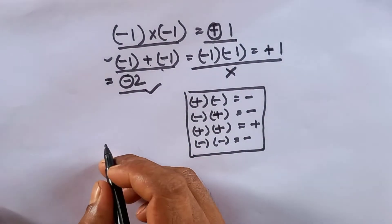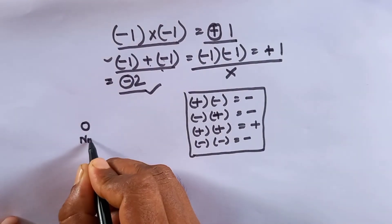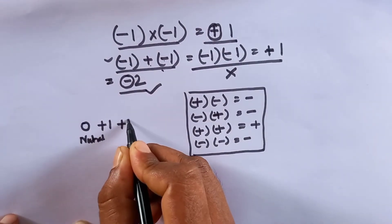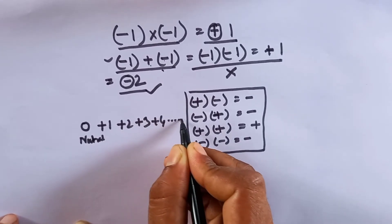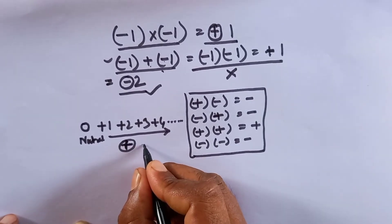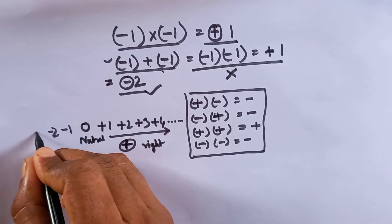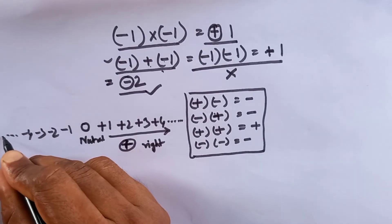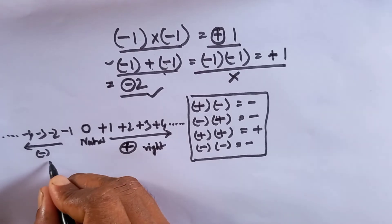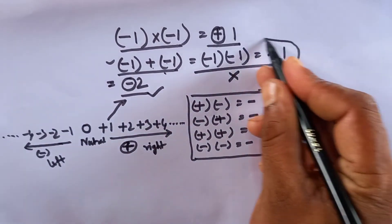So what is the logic? The logic is: here you know zero — zero is neutral. After zero: plus one, plus two, plus three, plus four. This is the positive side, and this is the right side of zero. And before zero: minus one, minus two, minus three, minus four — this side. Before zero is the negative side.